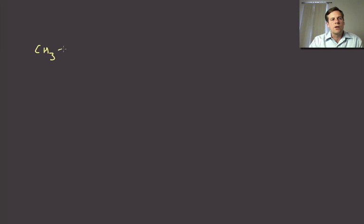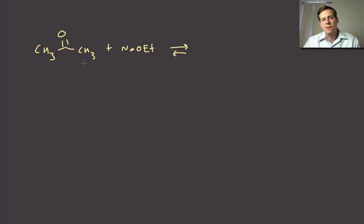Imagine if we wanted to generate the enolate of acetone. We thought, well, let's try sodium ethoxide. It is a base and this can serve as an acid, so there would be an equilibrium of proton transfer. To some extent we would form the sodium enolate of acetone and we would form ethanol.